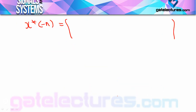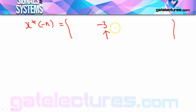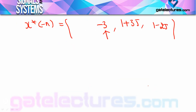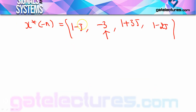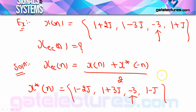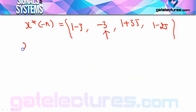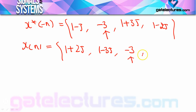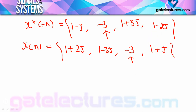Now find x*(-n) by flipping x*(n) about the origin (arrow position). The term 1-j (which was on the right) moves to the left, and 1-2j, 1+3j move to the right: x*(-n) = {1-j, -3↑, 1+3j, 1-2j}.